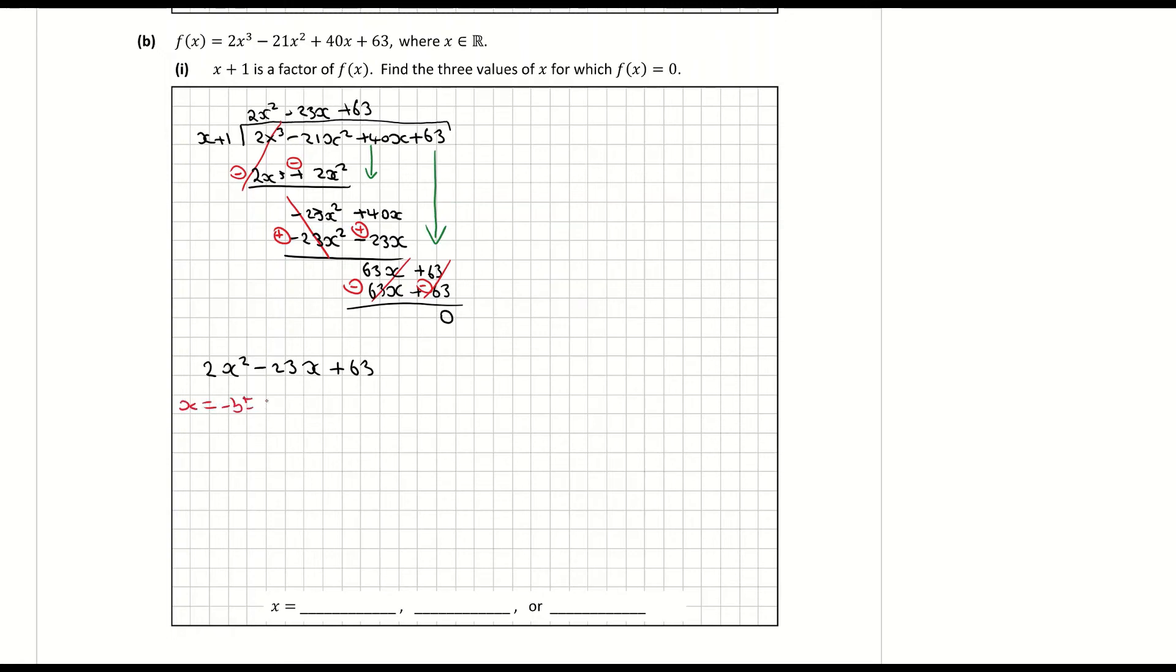So x is equal to minus b plus or minus the square root b squared minus 4ac all over 2a. a is my 2, b minus 23, c positive 63. So x is equal to minus minus 23 plus or minus the square root of negative 23 all squared minus 4 times a times c all over 2 times a which is 2 times 2. And when you do that out you get x is equal to positive 23 plus or minus the square root of 25. So that'll give me a 5 over 4.